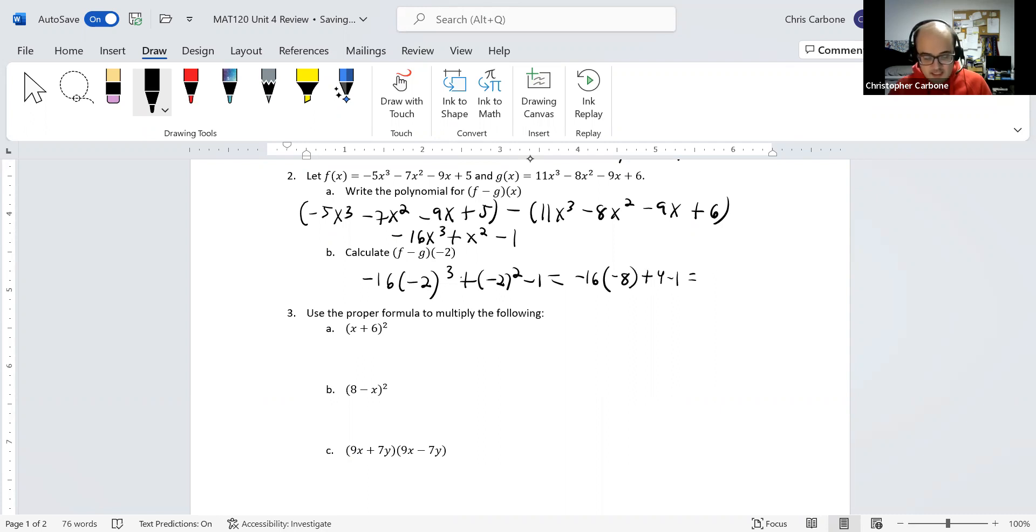Negative 16 times negative 8, that's going to be positive. This gives us 128 plus 4 minus 1.